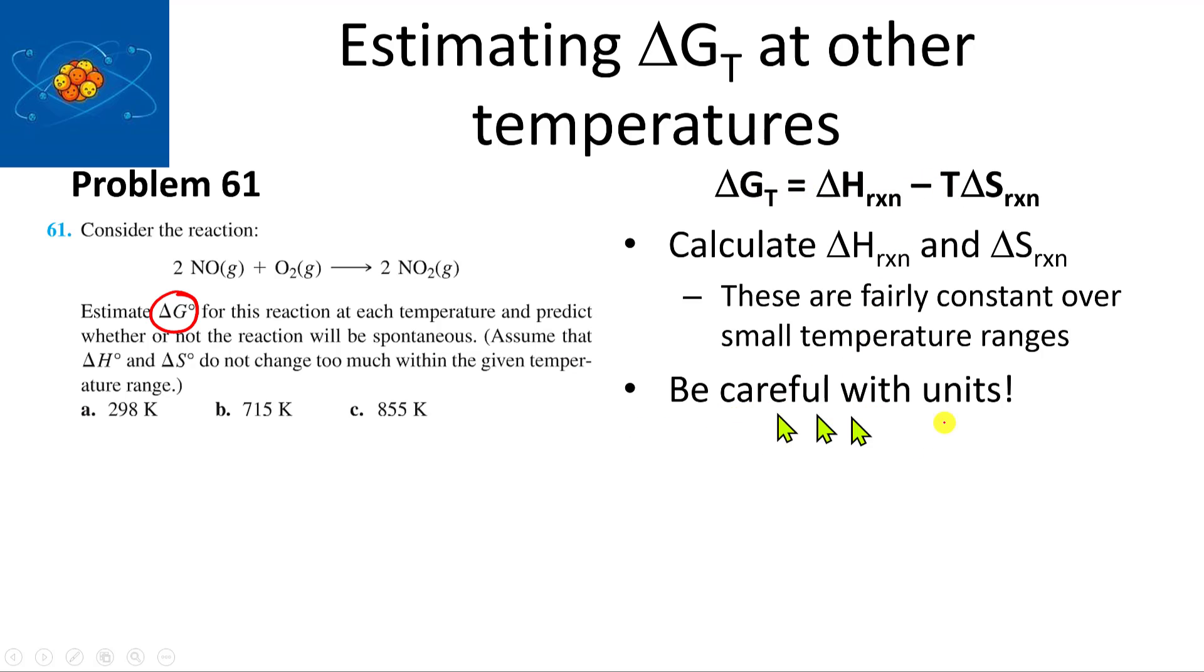The only thing you have to be careful about in these kinds of problems is units. The problem we're going to deal with is Problem 61. It says consider this reaction: 2 NO(g) + O₂(g) → 2 NO₂(g). Estimate delta G for this reaction at each temperature and predict whether the reaction will be spontaneous. Assume that delta H and delta S do not change too much within the given temperature range.